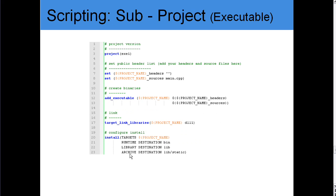Let's look at another example — our exe1 executable. Same structure: provided with the project name and two variables representing the headers and sources. Here we call addExecutable with the project name, headers and sources. In this case, exe1 is linking with dll1, and the same install information is provided.